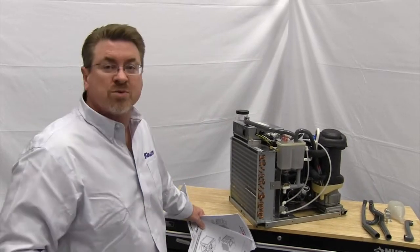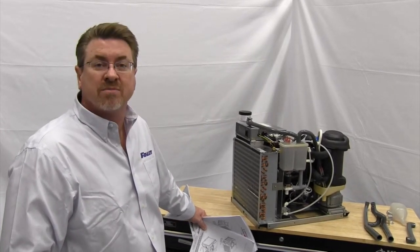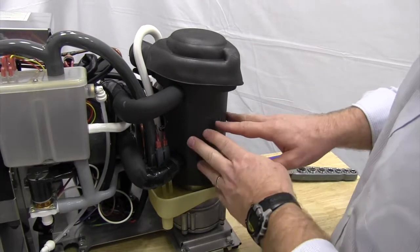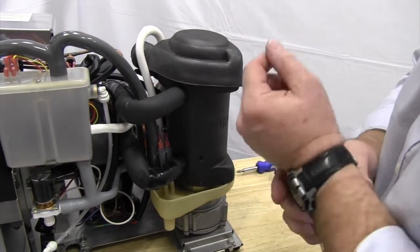Today we're going to look at the 425 air-cooled ice maker. We're going to go ahead and take apart the evaporator.